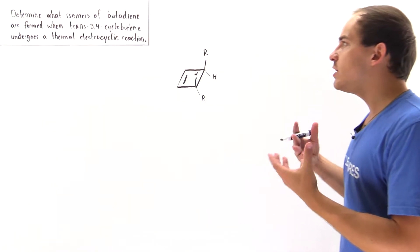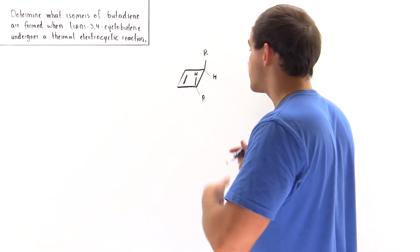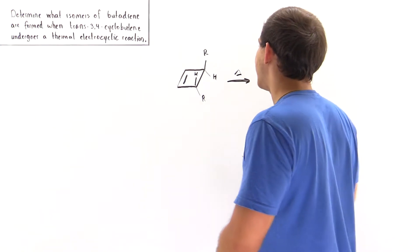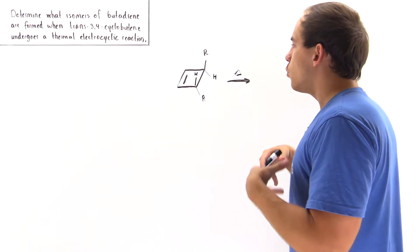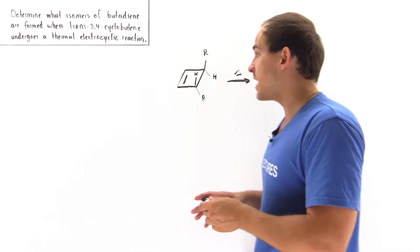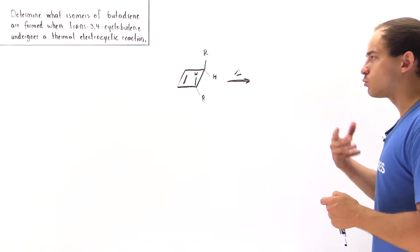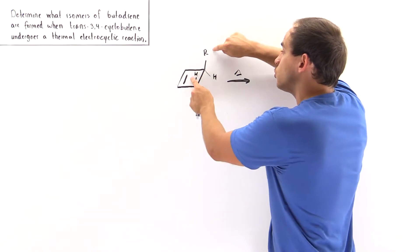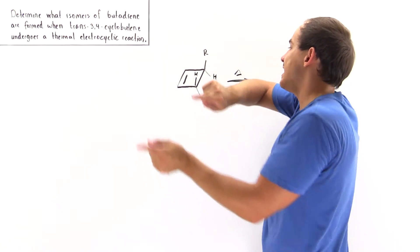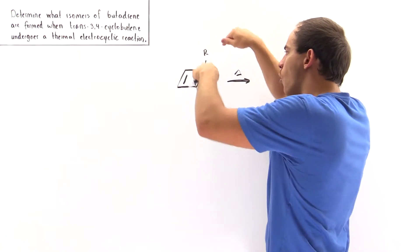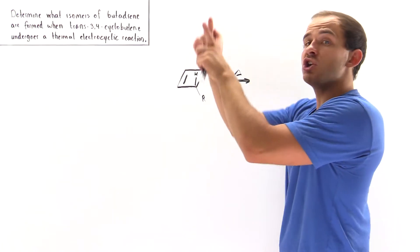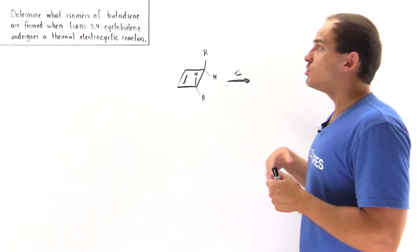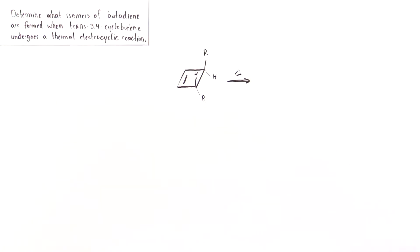When we discussed thermal electrocyclic reactions, we said that when this reaction takes place, we add heat as our energy source. We either have one type of conrotation or the other conrotation — in one conrotation, these two bonds or groups rotate in the same direction, going into the board, or they rotate in the same direction going out of the board. Thermal electrocyclic reactions do not undergo disrotation.